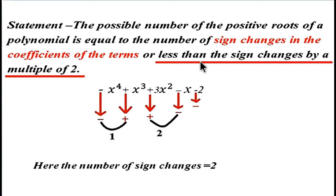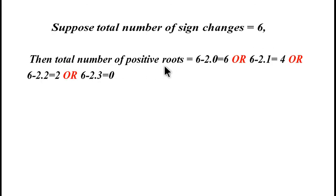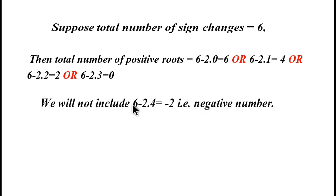Now, what is the meaning of 'less than the sign changes by a multiple of two'? Suppose the total number of sign changes is equal to six. Then the total number of positive roots could be 6 - 2×0 = 6, or 6 - 2×1 = 4, or 6 - 2×2 = 2, or 6 - 2×3 = 0. We will not include 6 - 2×4 because that gives a negative number, and the number of positive roots cannot be negative.